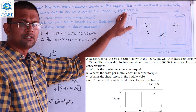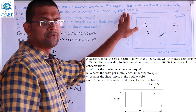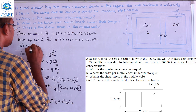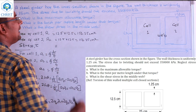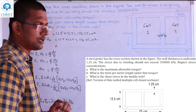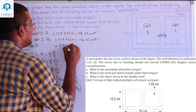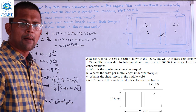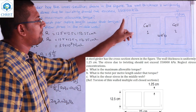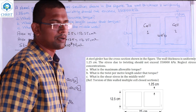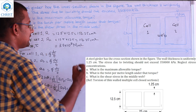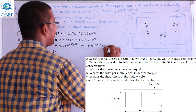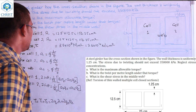The maximum allowable stress is equal to 3,50,000 kPa. Since we are working in centimeter units, we convert: 3,50,000 kPa equals 3.5 × 10⁸ N/m², which equals 3.5 × 10⁴ N/cm².